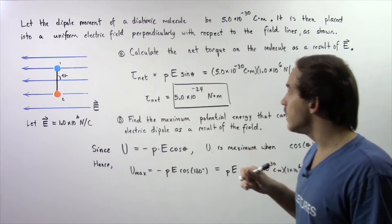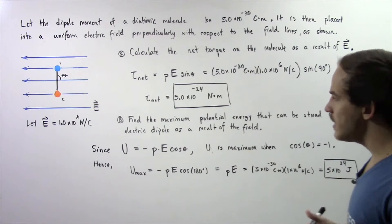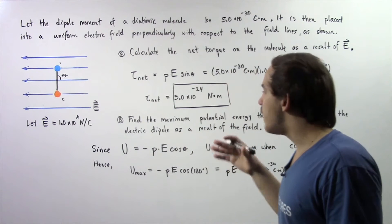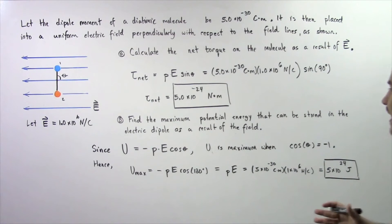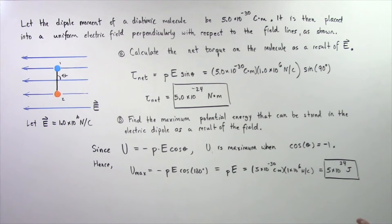in part A calculate the net torque on the molecule as a result of this electric field and in part B find the maximum potential energy that can be stored inside our electric dipole as a result of that electric field.